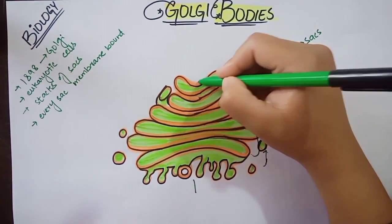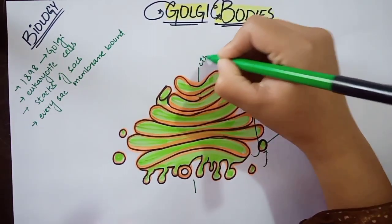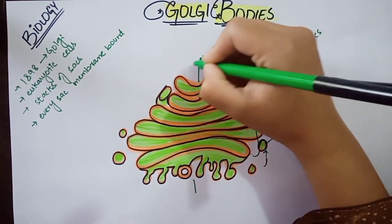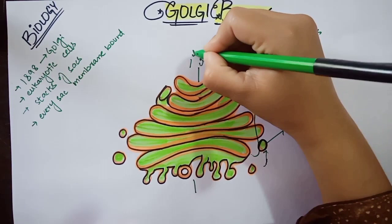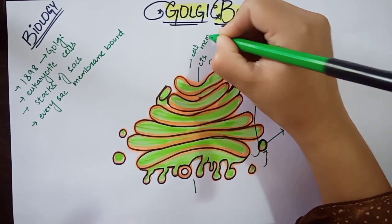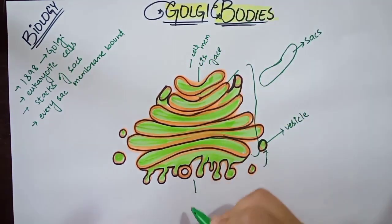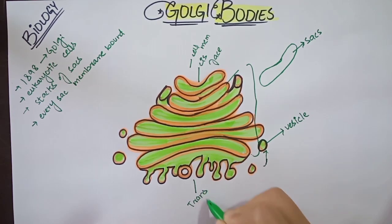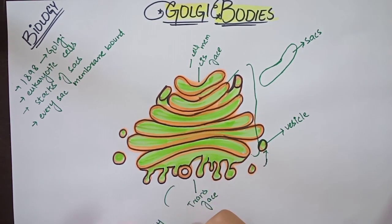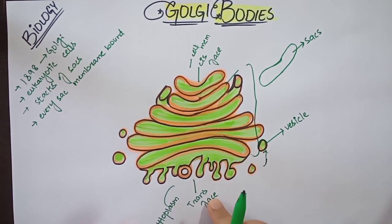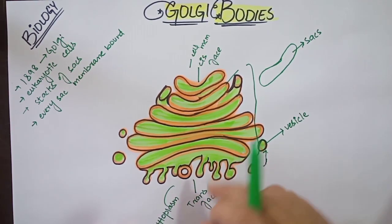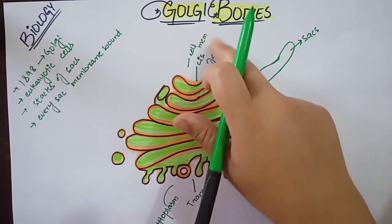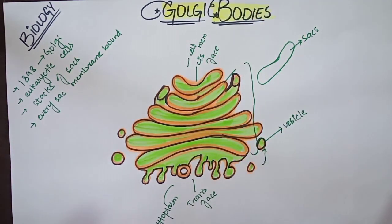Golgi bodies have two faces. The face towards the cell membrane is called the cis face. The face towards the cytoplasm is called the trans face. So Golgi bodies have a cis face and a trans face.